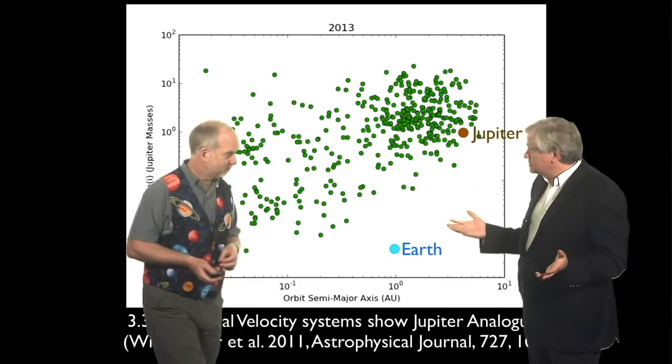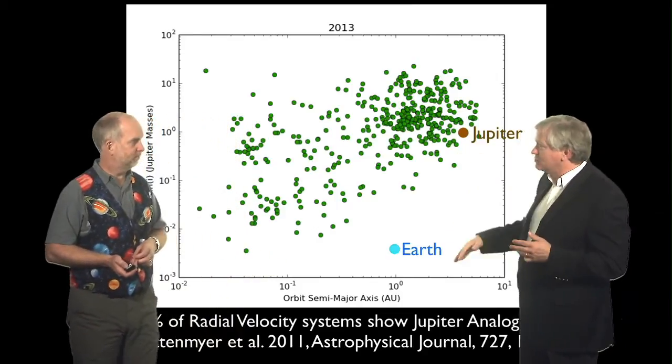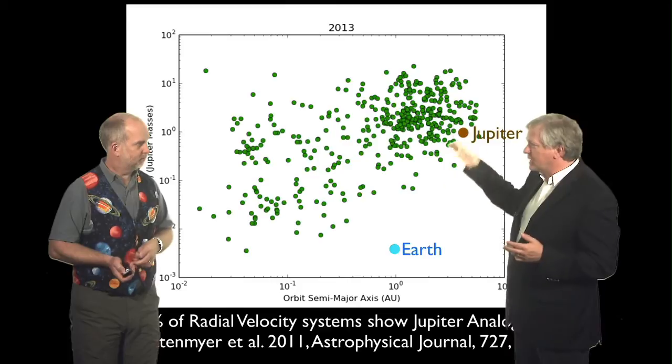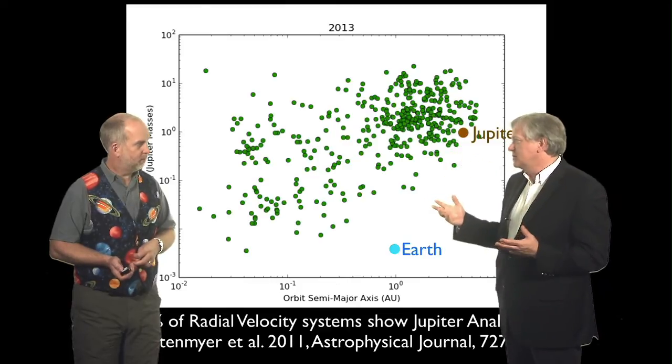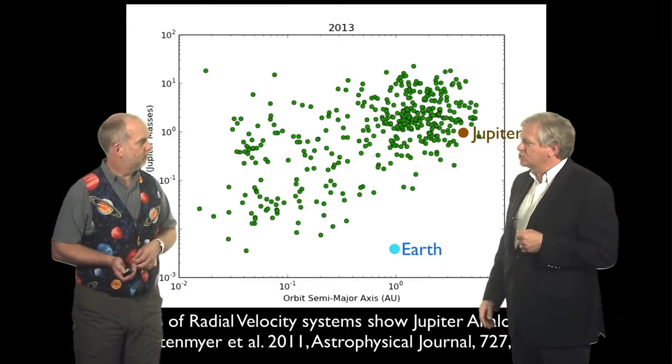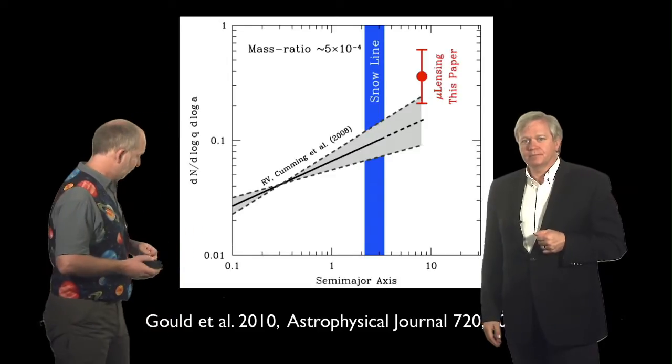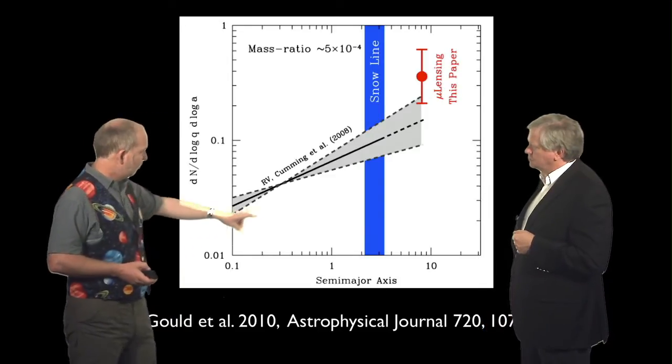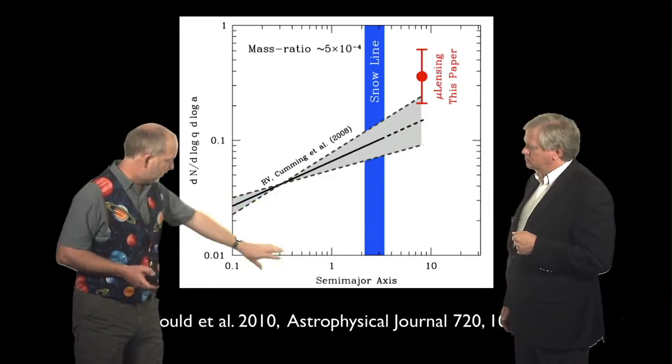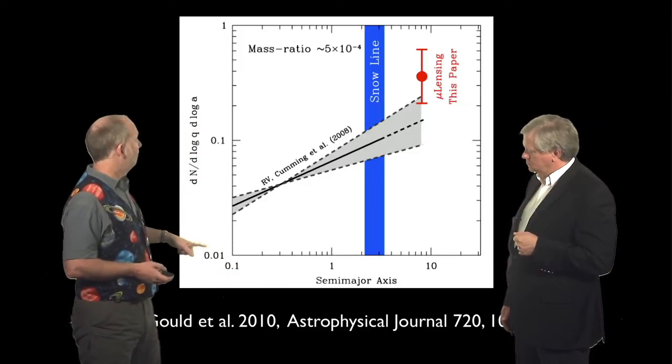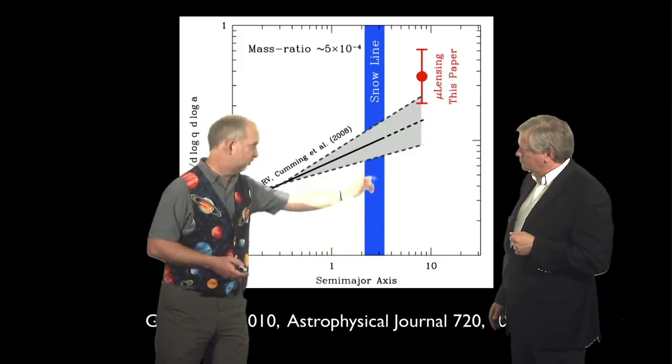But fortunately we have microlensing which doesn't have that selection bias. It's much better at doing it. We just don't have as many objects. So what do we get if we compare the two results? Well let's compare this and we find here the data from the radial velocity surface is mostly close in. So this is the number of these big planets as a function of distance. Here's a snow line.